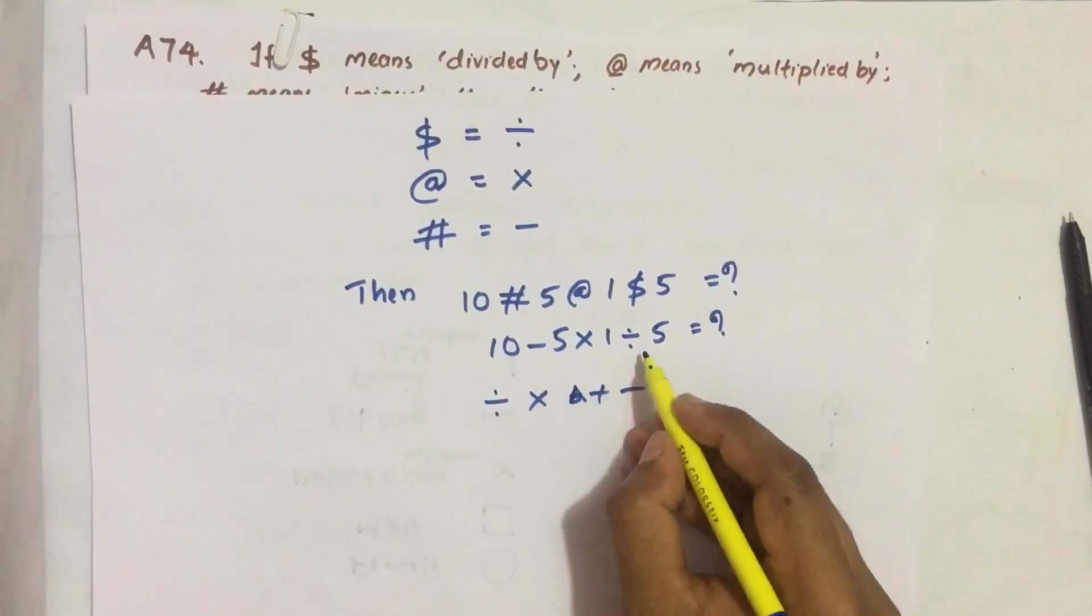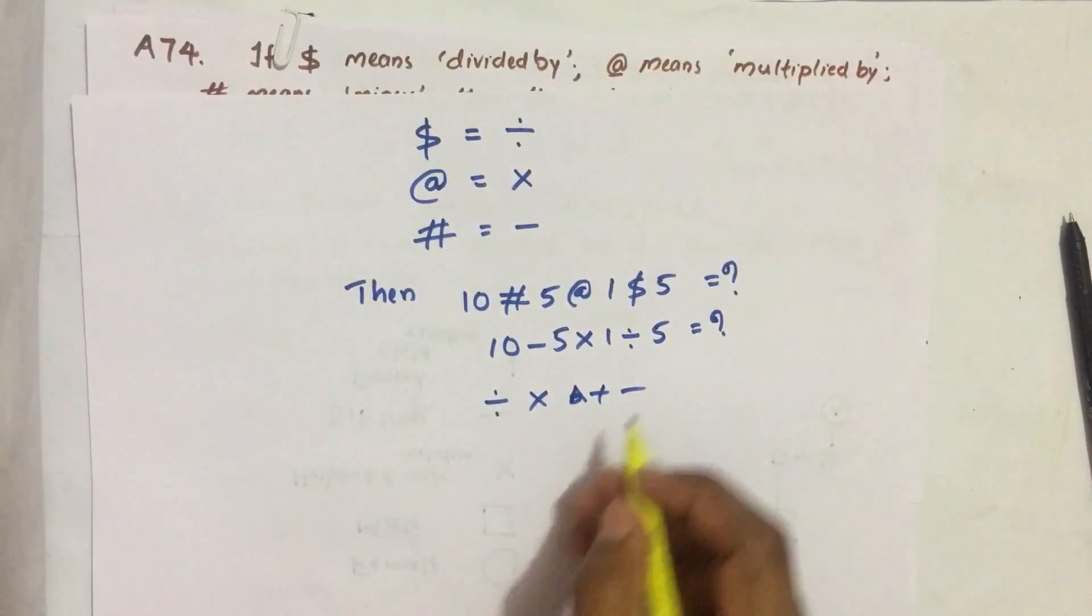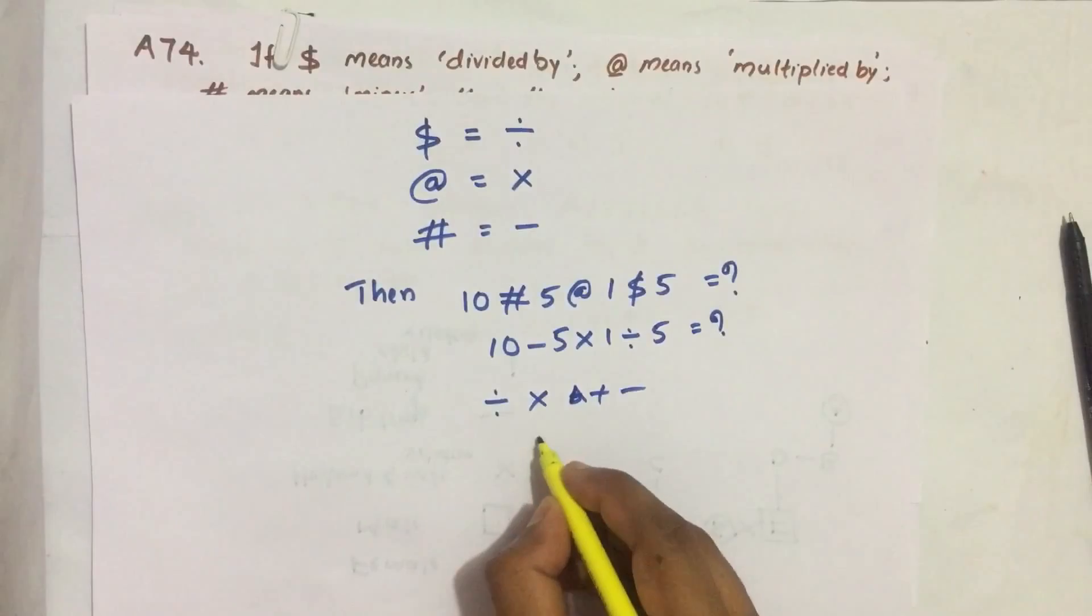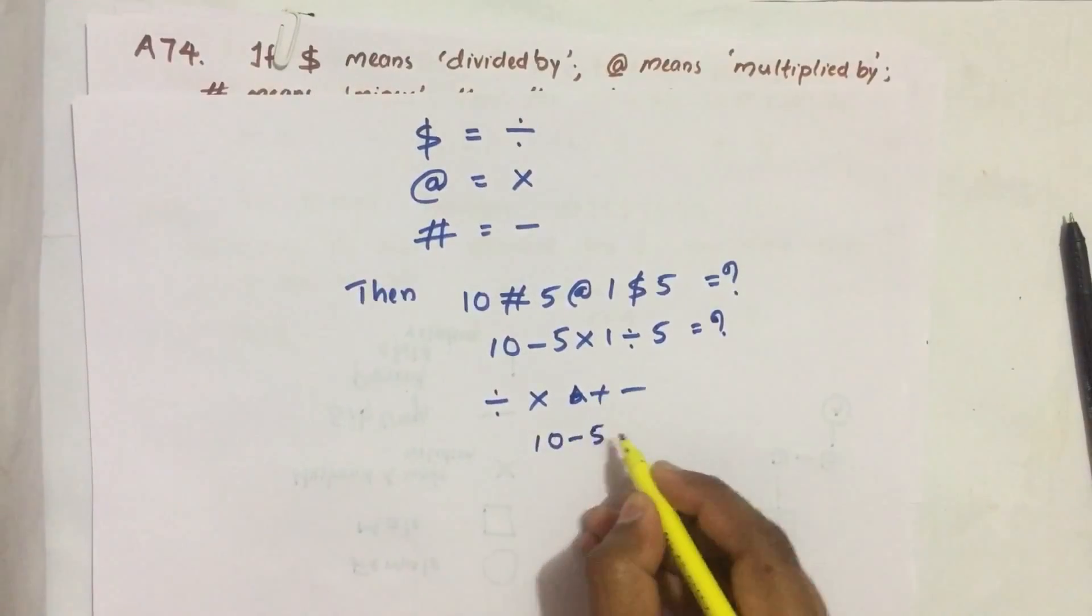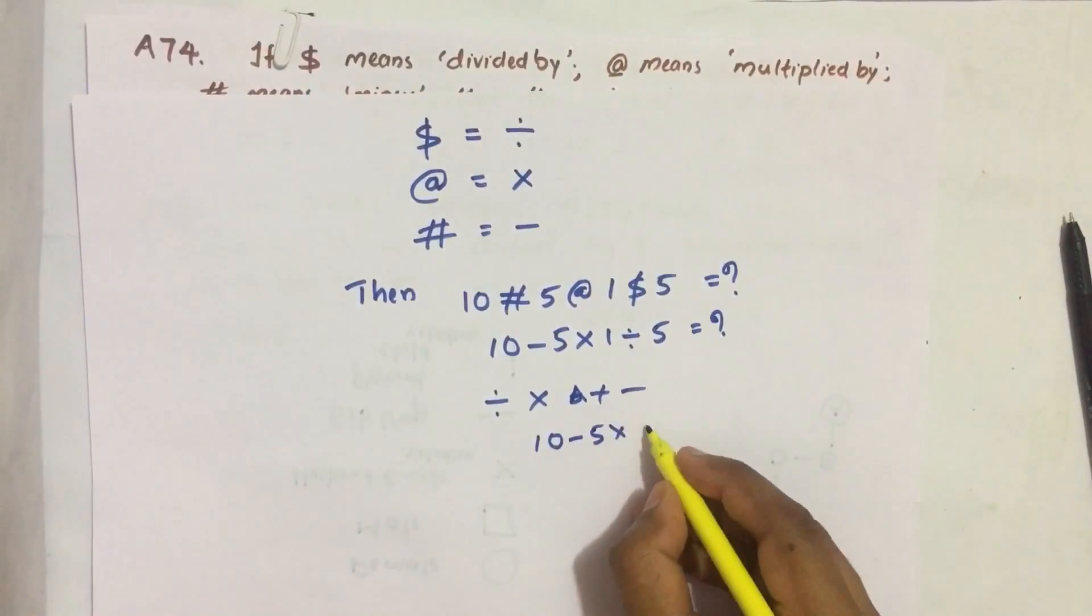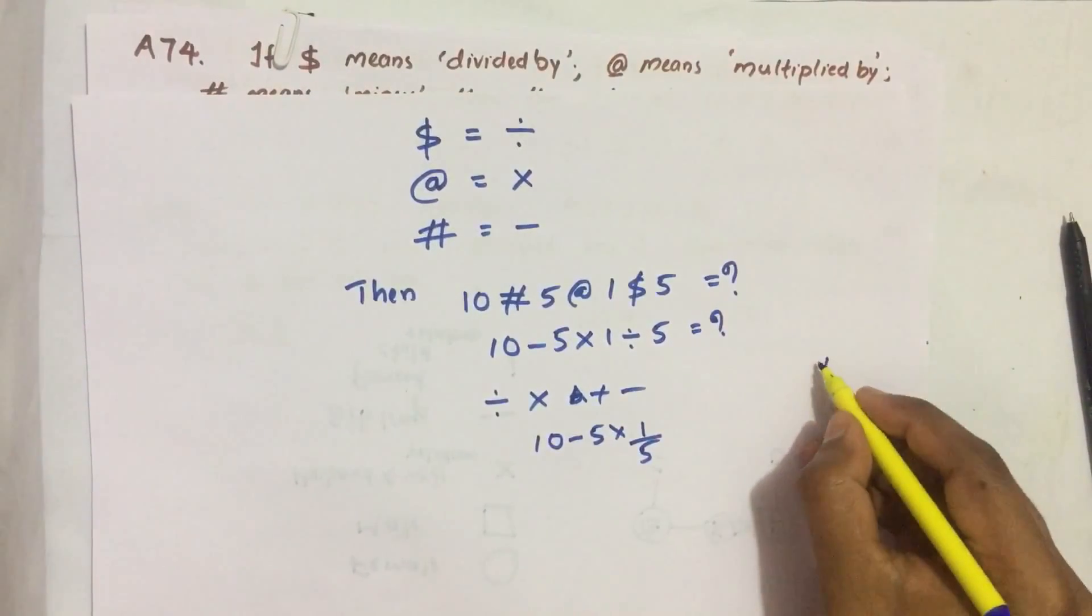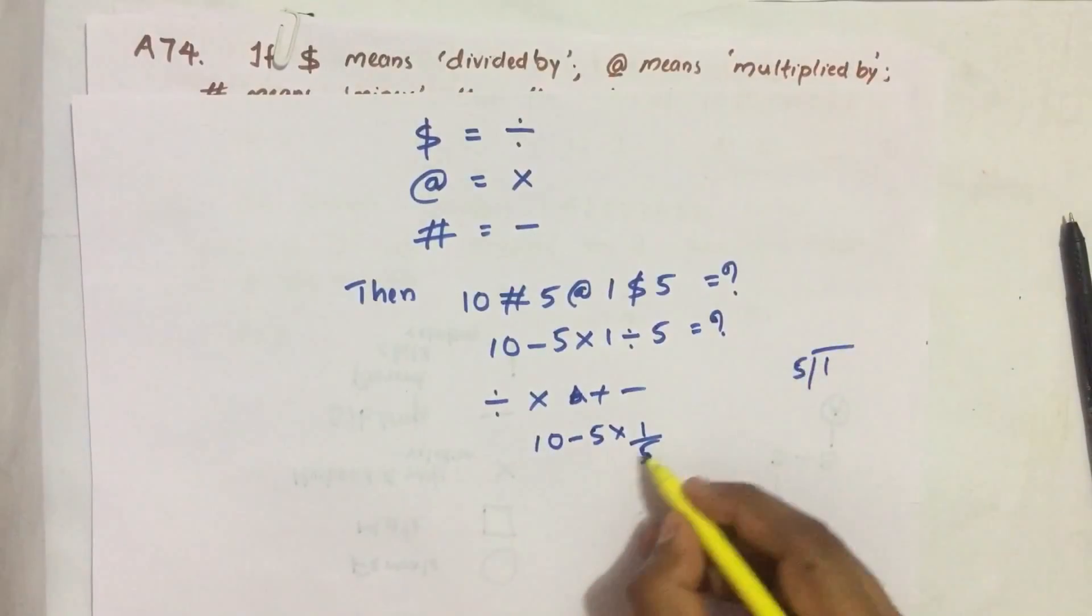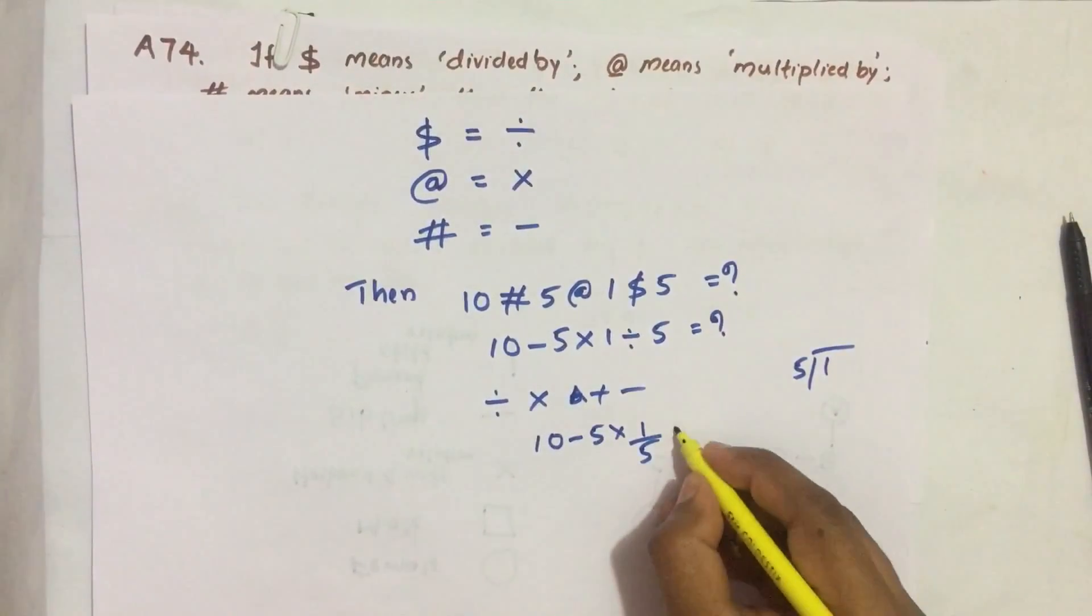So here first we do division. 10 minus 5 into 1 divided by 5. 1 divided by 5 means one-fifth. That we can write like this.